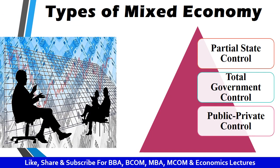The mixed economy can be a partial state control, where the factors of production like machines and factories are owned by private people, and the government only plays a regulatory role. Under total government control, there is no interference of private players; the government takes all the decisions and all losses and profits are borne by the government itself. The third type is public-private control, where there is a joint venture between the state and the private players.